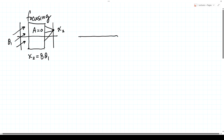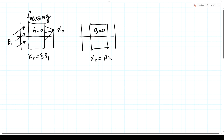For the system with B equal to zero: if B equals zero, then x2 equals A·x1. All rays that leave from a point with coordinate x1 and enter this system come out and converge to a point with coordinate x2. That is an imaging system — you get an image of this point on the object.